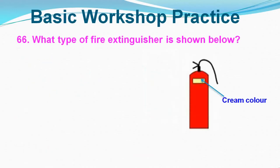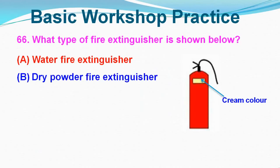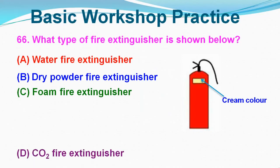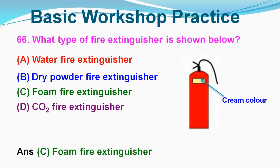Question No. 66: What type of fire extinguisher is shown below? Option A: Water fire extinguisher, Option B: Dry Powder fire extinguisher, Option C: Foam fire extinguisher, Option D: CO2 fire extinguisher. Correct answer is Option C, Foam fire extinguisher.